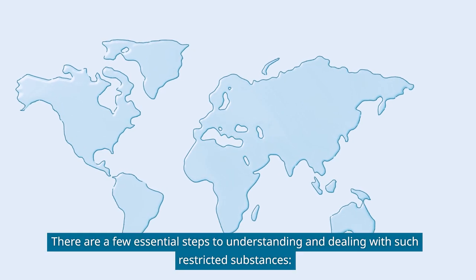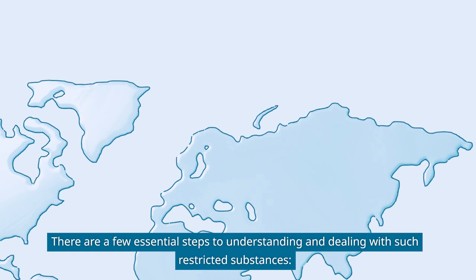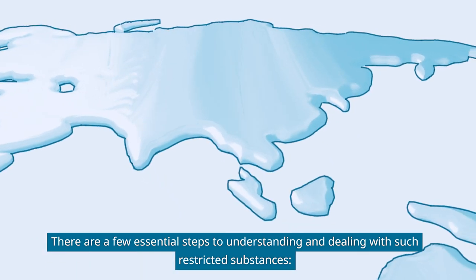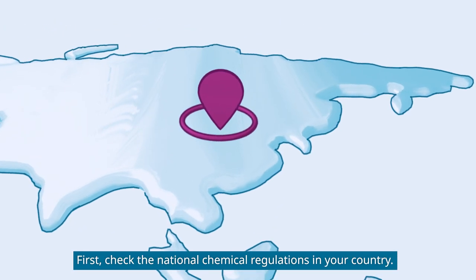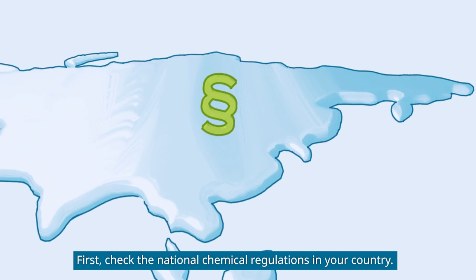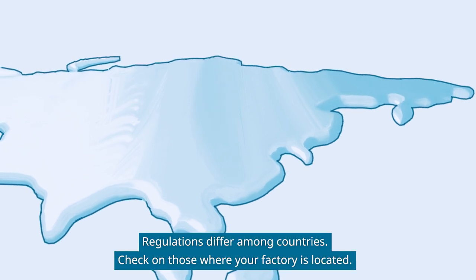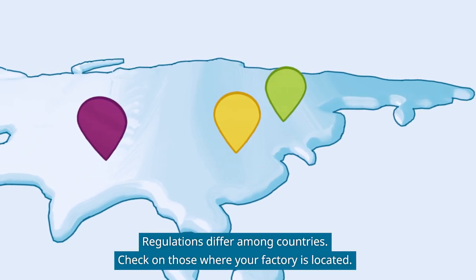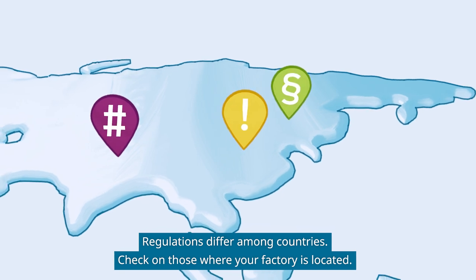There are a few essential steps to understanding and dealing with such restricted substances. First, check the national chemical regulations in your country. Regulations differ among countries — check those where your factory is located.